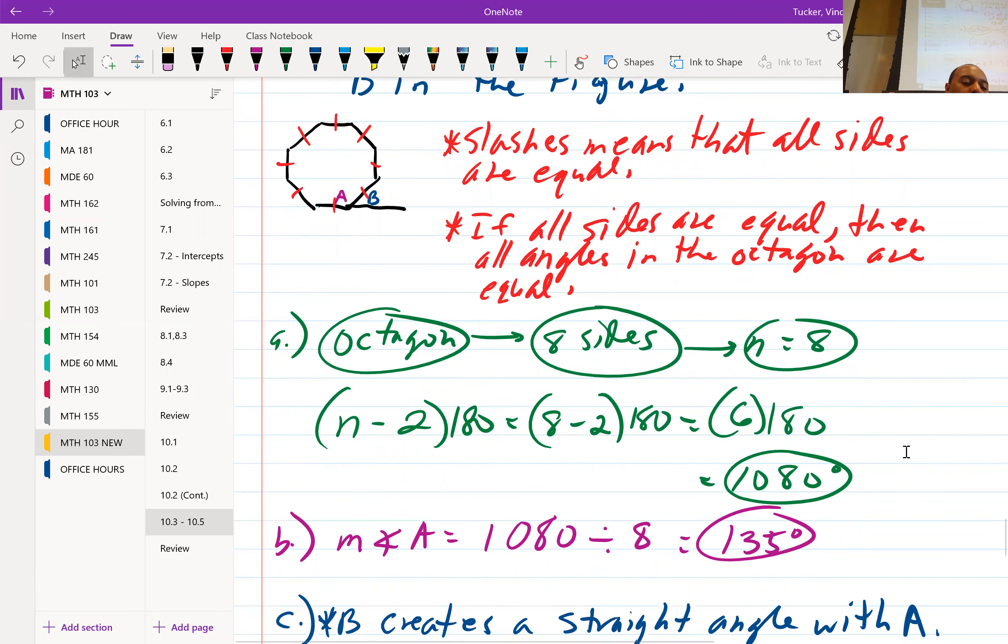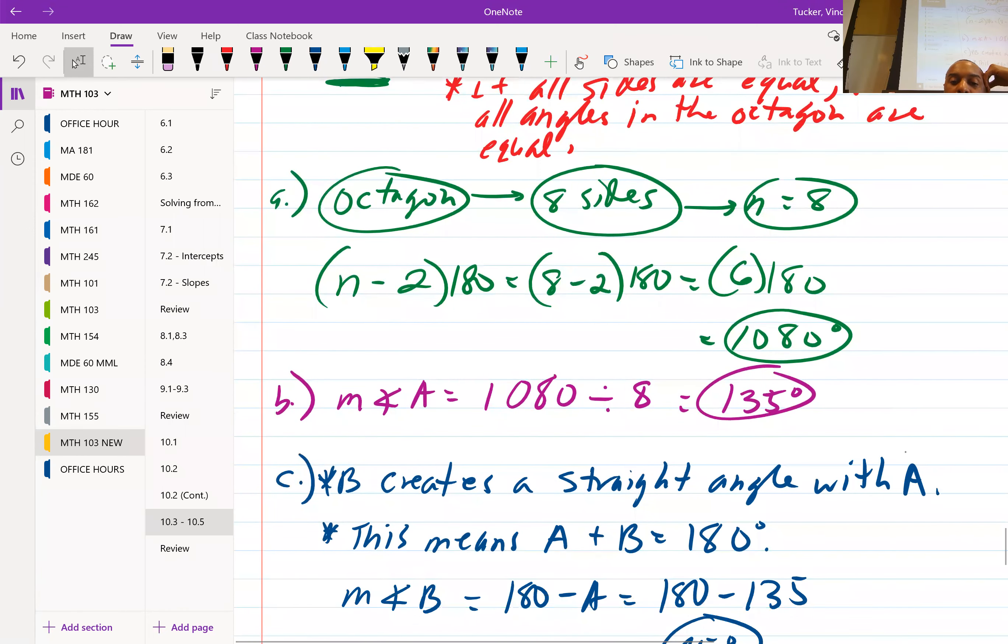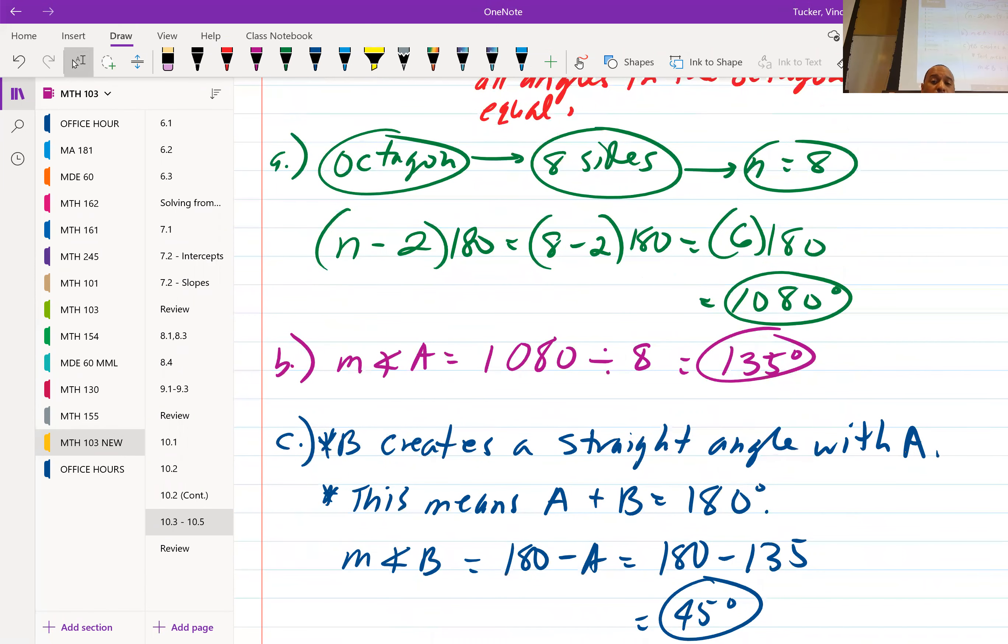All right, so question C asks us to find angle B. So we notice that B creates a straight angle with A, straight line, straight angle. That means that they both add up to give you 180 degrees. So if I want to figure out what B is, I can take what A is, subtract it from 180, and that'll give me B. And so 180 minus 135 is 45.